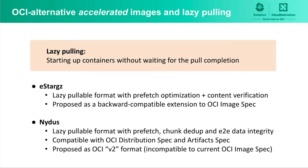For solving this issue, several OCI alternative image formats are discussed in the community. They aim to speed up container cold start, so they are sometimes called accelerated images. Accelerated images enable a technique of container image distribution called lazy pulling. This allows container runtimes to start up containers before the entire image contents are locally available. Instead, necessary chunks of contents, like files, are downloaded from the registry on demand. In this talk, we put focus on two image formats and deep dive into how lazy pulling is achieved.